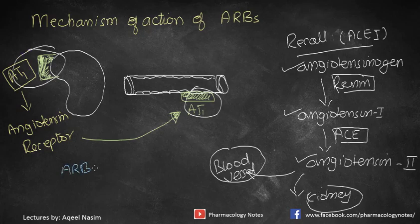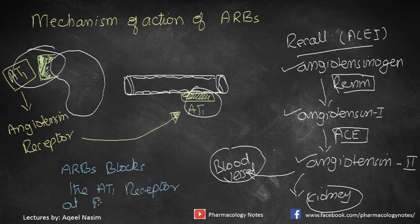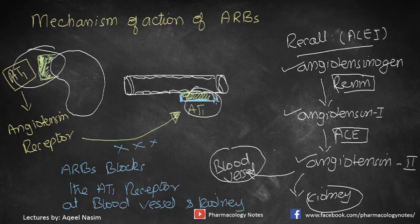When ARBs — angiotensin receptor blockers — are administered, they block or antagonize the AT1 receptor at both the blood vessels and the kidneys.